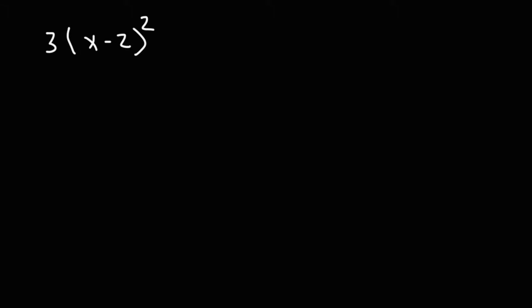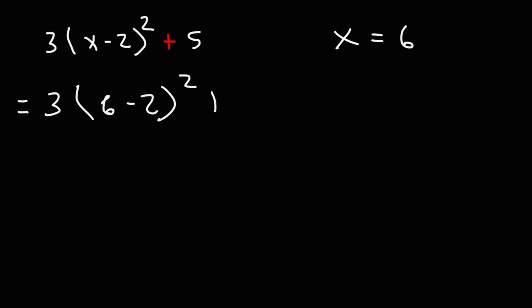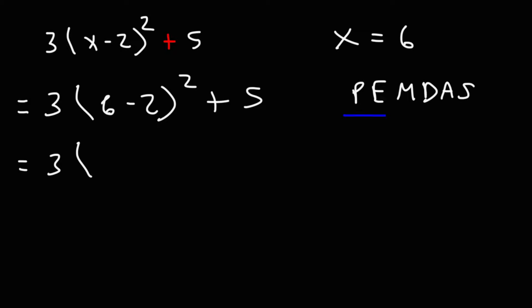Here's another problem: 3 times (x minus 2) squared plus 5, where x is 6. Perhaps you've heard of PEMDAS — please excuse my dear aunt Sally. When you see this expression, work with operations inside the parentheses first, then exponents. A and S means addition and subtraction; M and D means multiplication and division. Priority goes left to right. So work with parentheses and exponents before multiplication, addition, or subtraction.